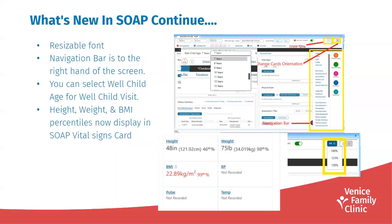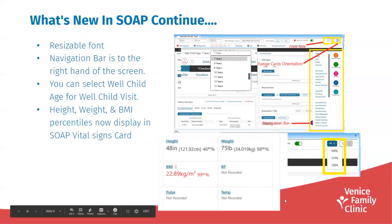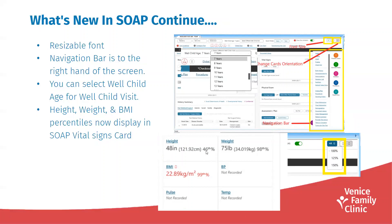The height, weight, and BMI percentiles now display in the SOAP vital signs card. As you can see in the screenshot, we have the height, the weight, the BMI, and then at the end you have the percentile displaying.